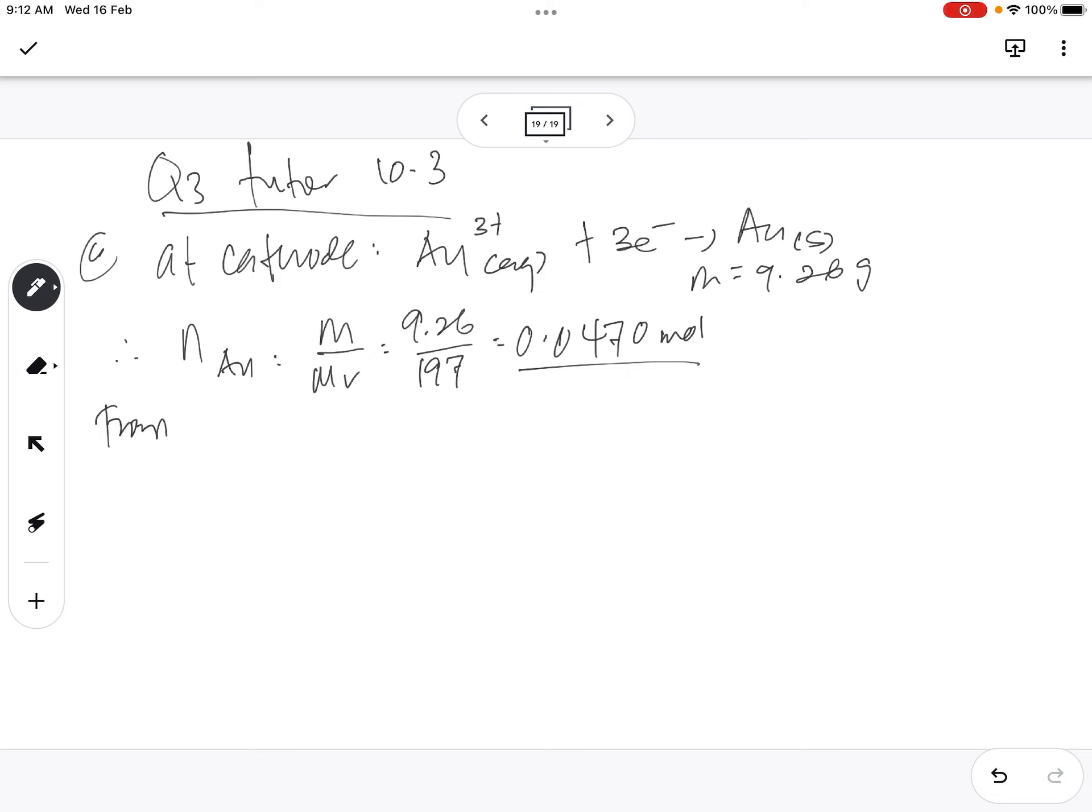From the equation, we can see that 3 mole electron equivalent to 3 Faraday equivalent to 1 mole gold. Therefore, if it is 0.0470 mole of gold, we have to find how many Faraday. So if I want to know how many Faraday, then I have to multiply. 1 mole, 3 Faraday. 0.047 times 3. So I get 0.141 Faraday. Please check, is it correct? Yes, sir.